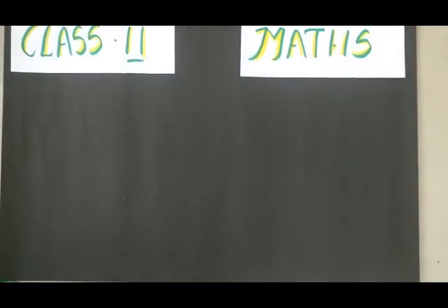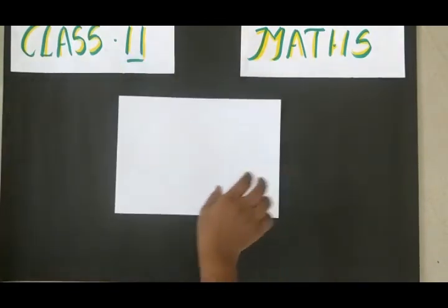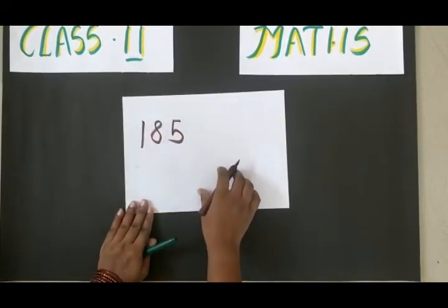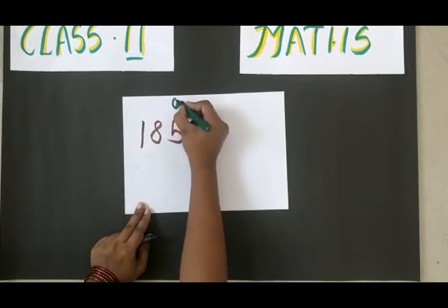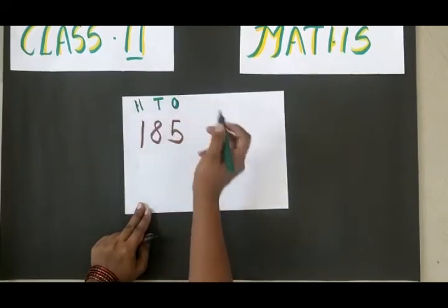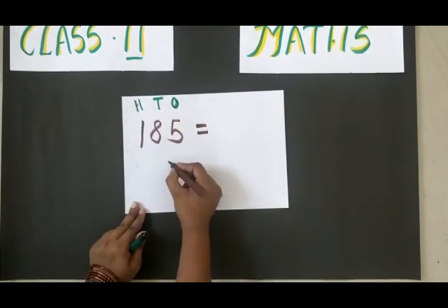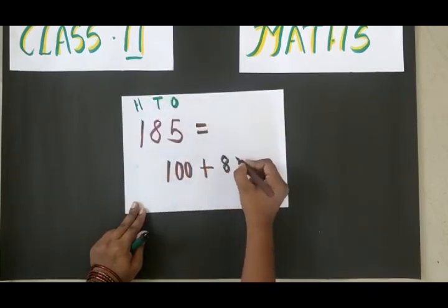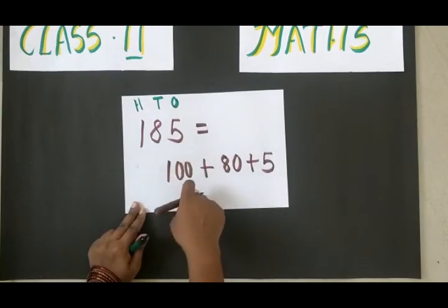Next we are going to learn the expanded form. The expanded form is nothing but we are going to explain the number. Here I am writing the number 185. This is a three digit number. First I should write the place value: 5 ones, 8 tens, and 1 hundred. Now I am going to write the answer in expanded form: 1 times 100 is 100, plus 8 tens is 80, plus 5 ones is 5.